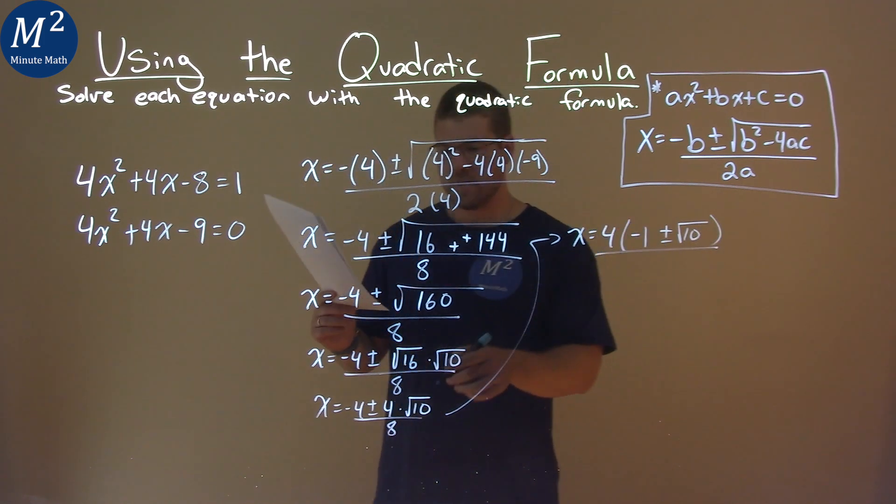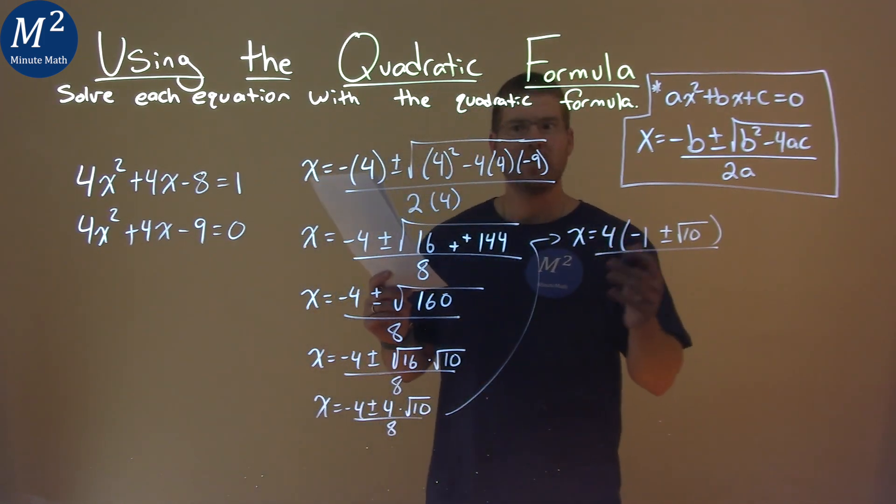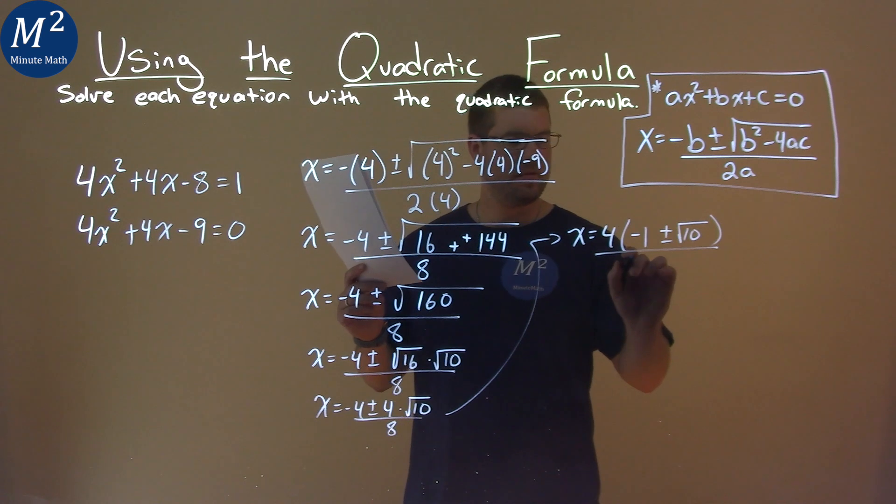all over the denominator, 8, which, kind of re-breaking it back up, is 4 times 2.